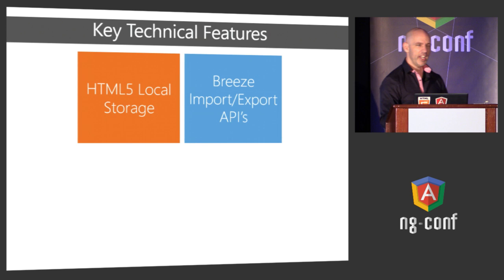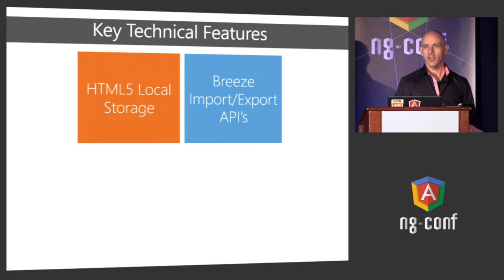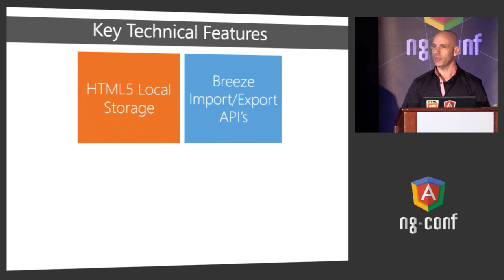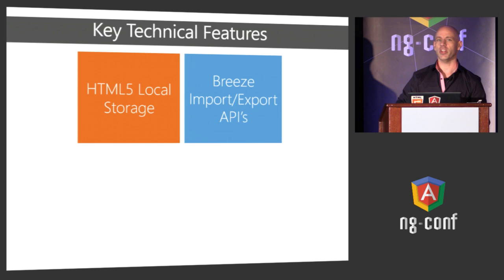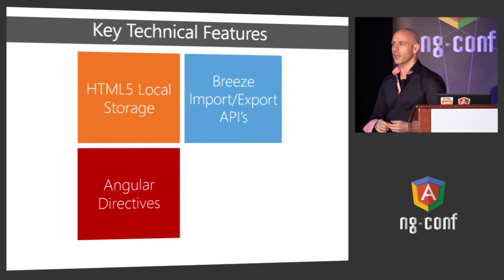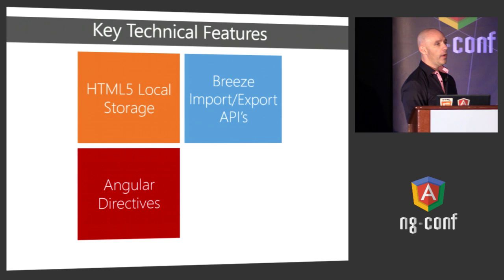We're using local storage in the browser and taking advantage of features from a library called Breeze.js, which provides rich data management on the client. It allows us to easily export or import entities out of its local cache in Angular. When I want to save data off to local storage as WIP, I use the export entities feature — it serializes the entity along with its changes and state, and sticks it in local storage. Then I can rehydrate it when needed.